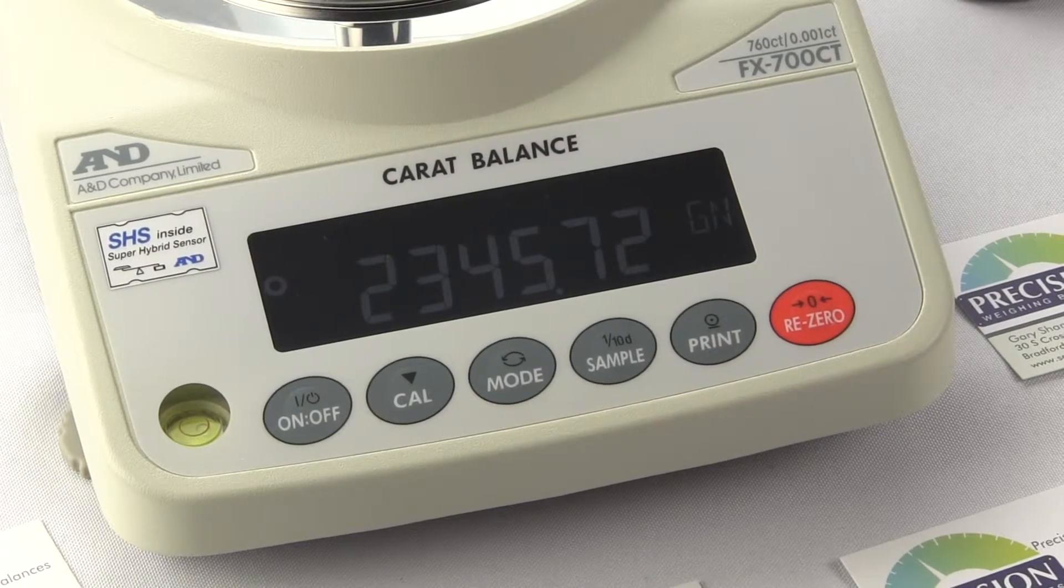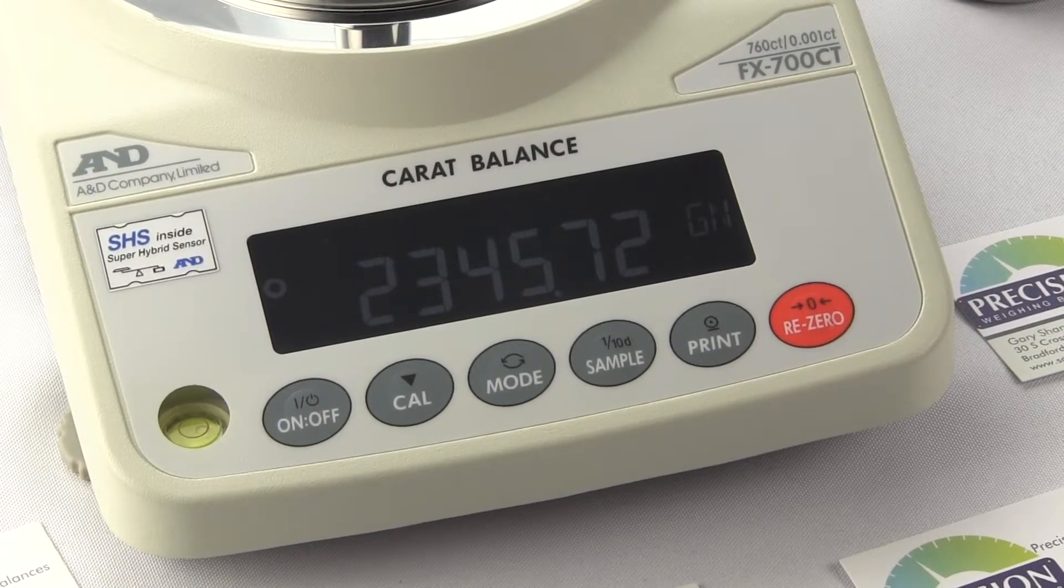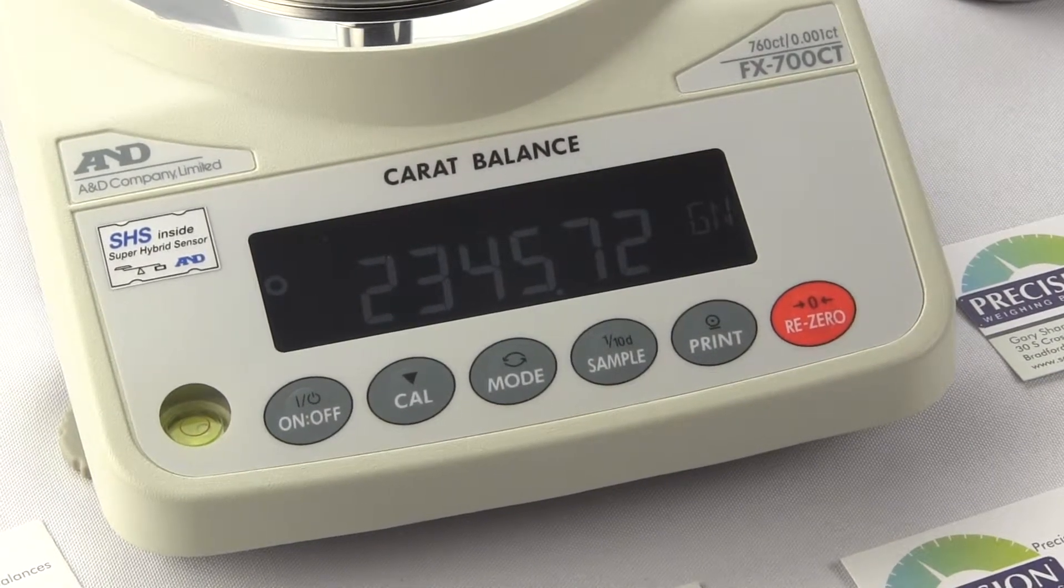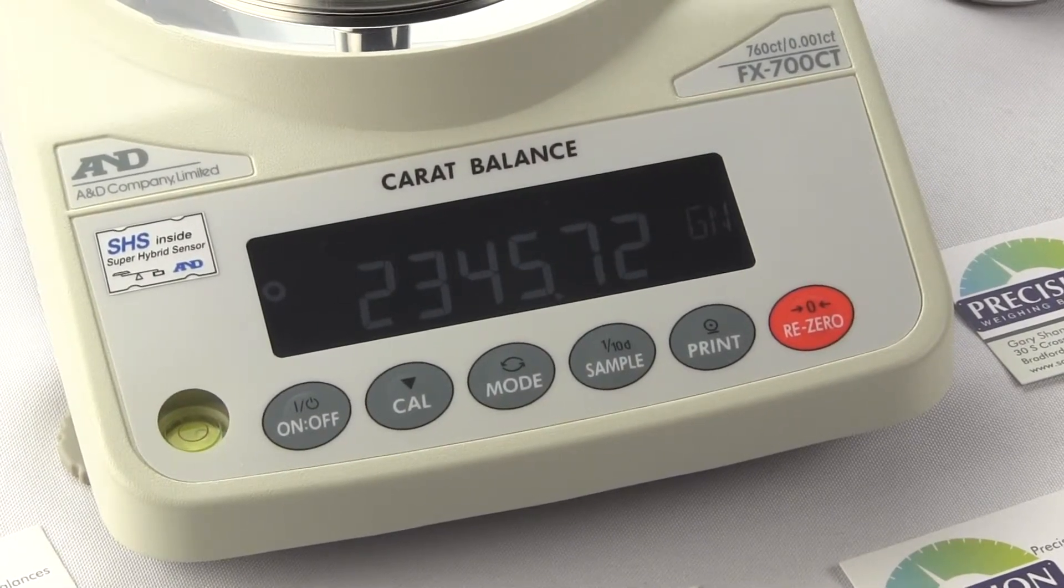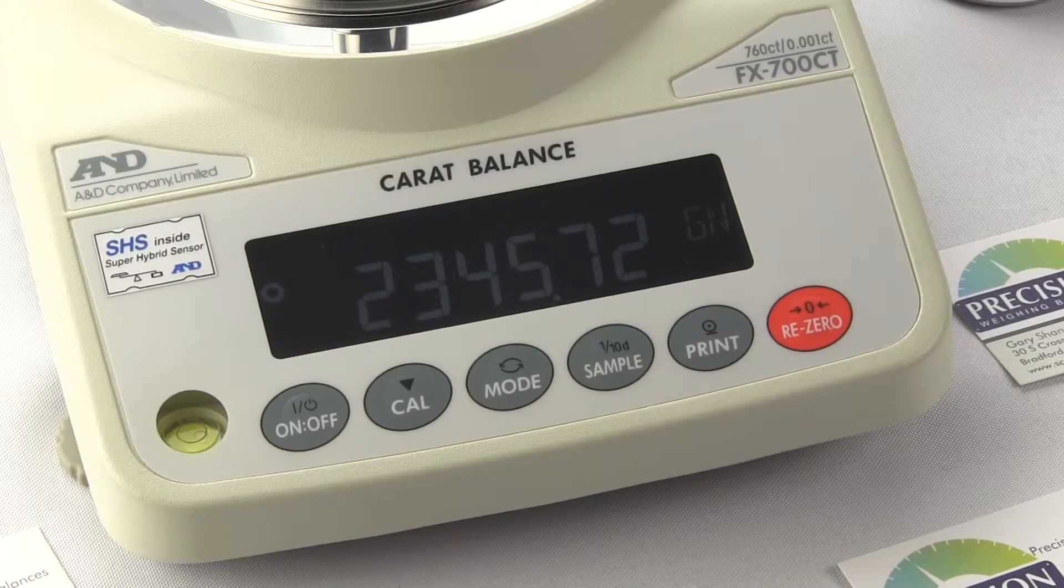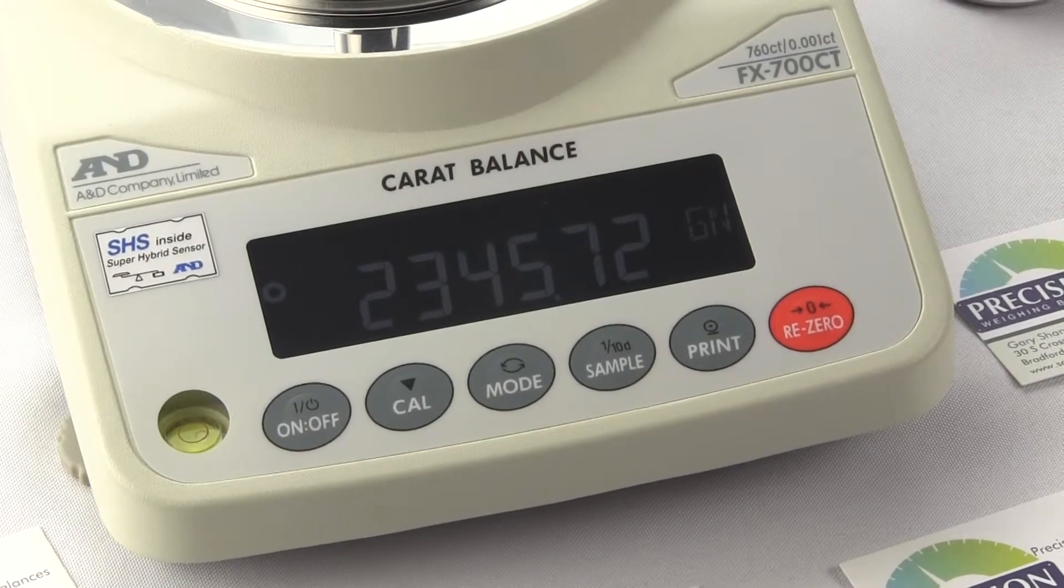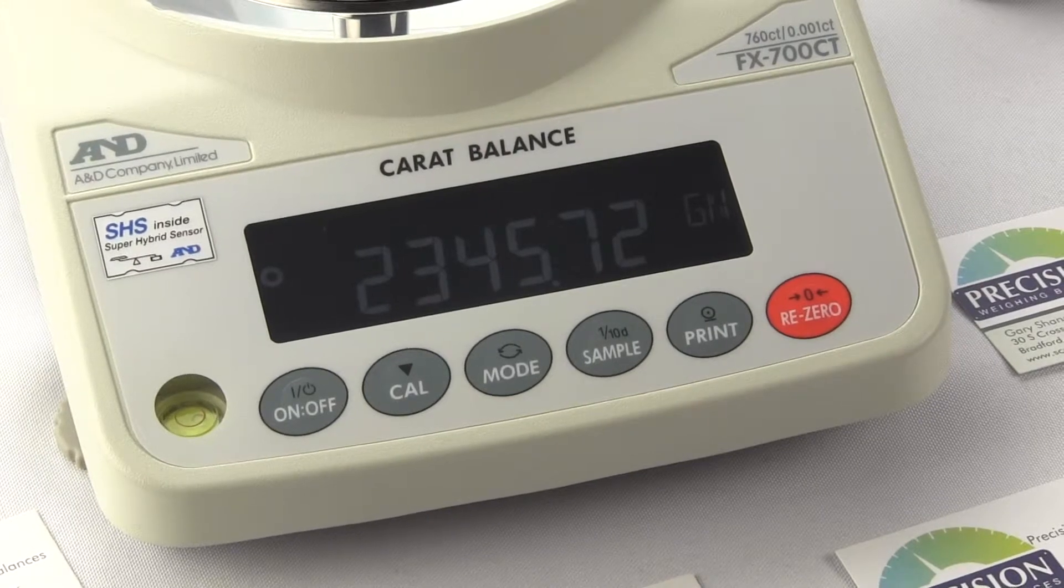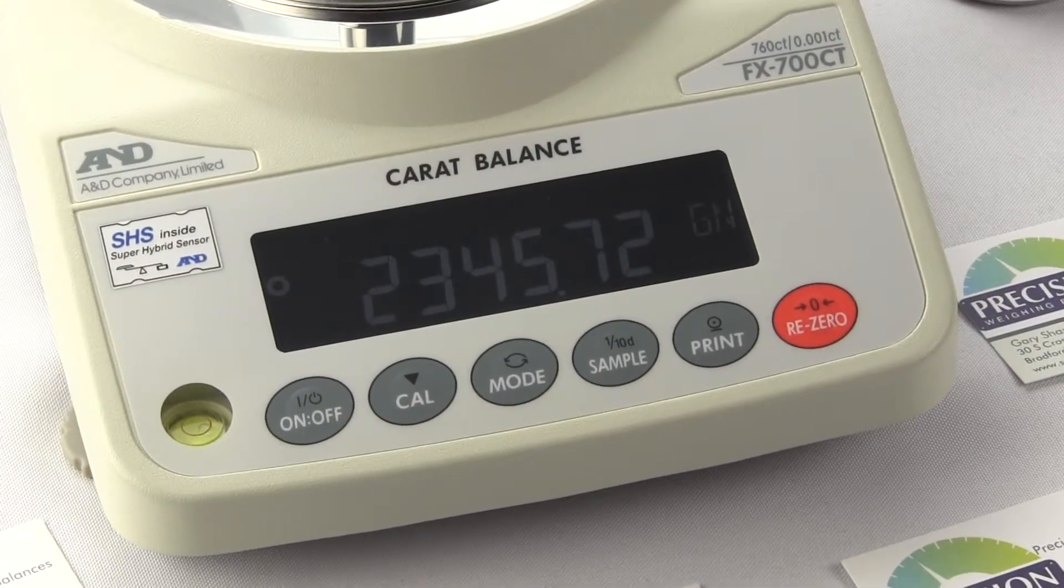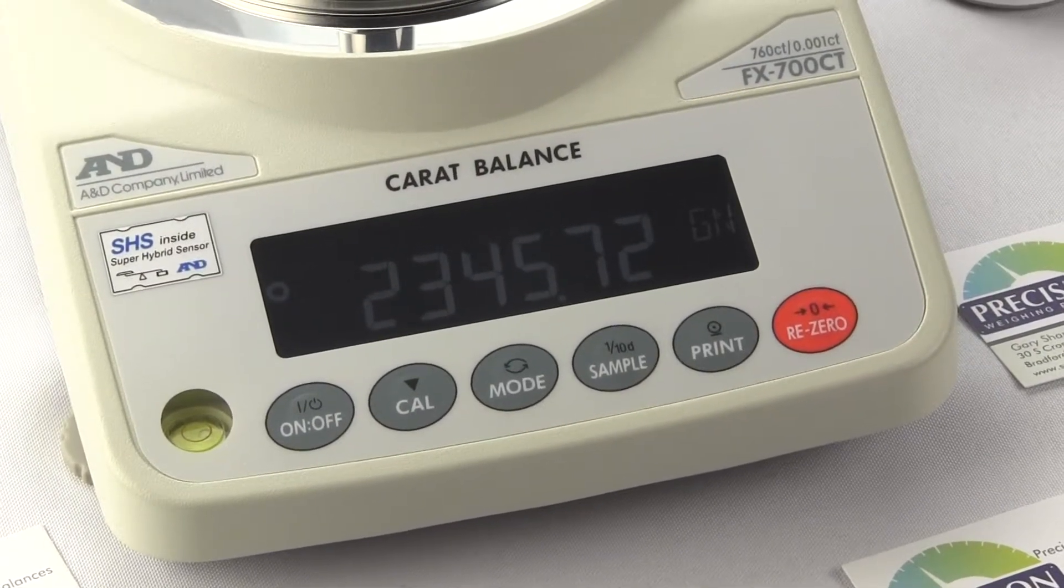So if you're a competition long range shooter shooting over 400 yards and especially anyone over a thousand yards we still recommend the Sartorius Entris 64 over the FX700CT. That's because the Entris is 10 times the readability and for competition shooters they want to know every single round is to the kernel.